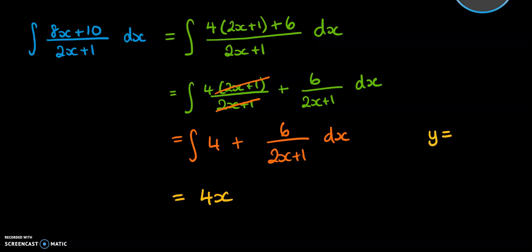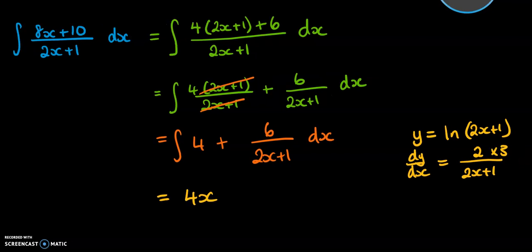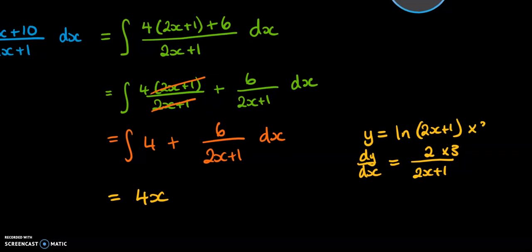If we differentiated that, we would get the 2x plus 1 on the bottom and then differentiate the top to get the 2 on the top there. So that one is 3 times smaller than we need it to be. So we need to times this by 3, which means that we also need to have that beginning bit must have been times by 3.